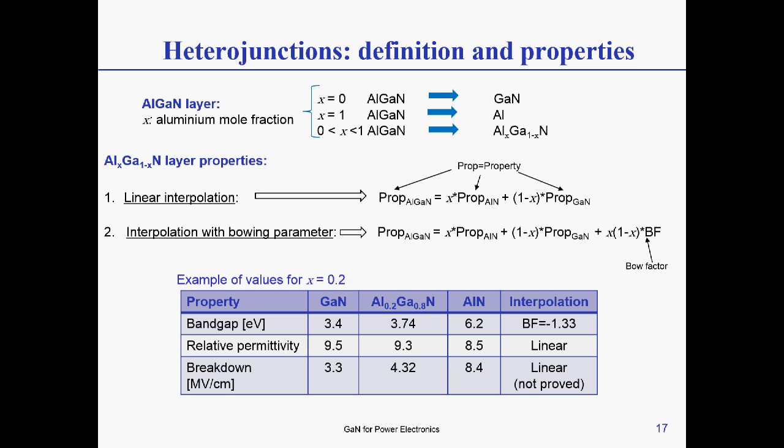How do we calculate the properties of the AlGaN layer? The easier way is to look at just through linear interpolation, which is the first equation you have here. If prop stands for properties, then you linearly interpolate the properties of the aluminum nitride with the one of the GaN, and you obtain the one of the AlGaN. In literature, you can find interpolation that uses the Bowing parameter, and these are pretty much derived by experimental results. So there is nothing very well defined regarding the value of this Bowing parameter. It's something you measure and you extrapolate.